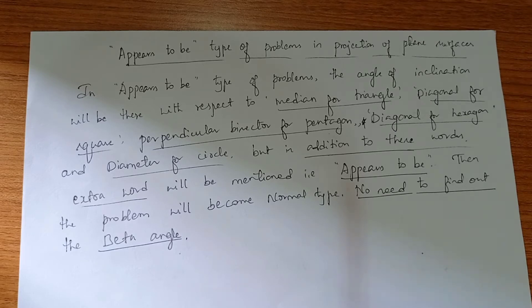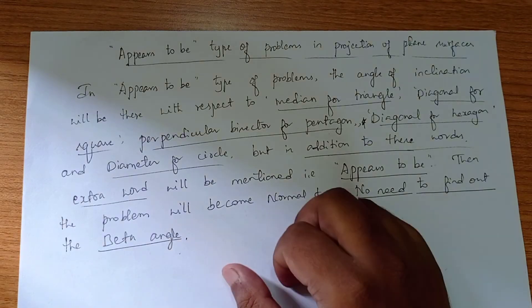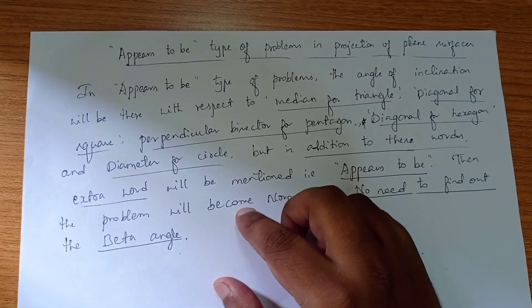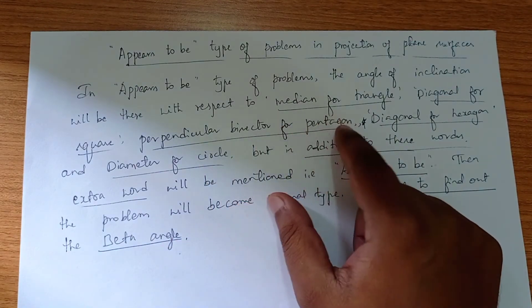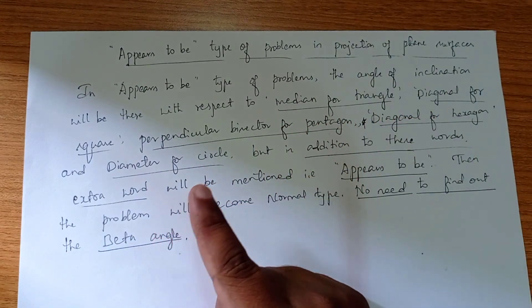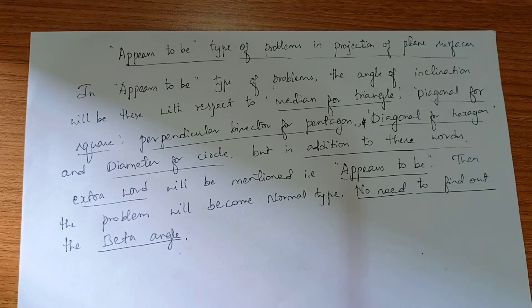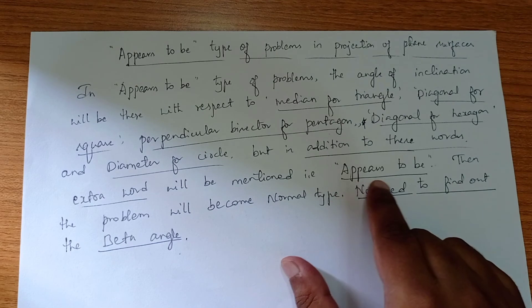In 'appears to be' type problems, you can find in the question that the angle of inclination will be there with respect to median for triangle, diagonal for square, perpendicular bisector for pentagon, diagonal for hexagon, and diameter for circle. But in addition to these words, there will be a particular word mentioned in the question that we call 'appears to be.'